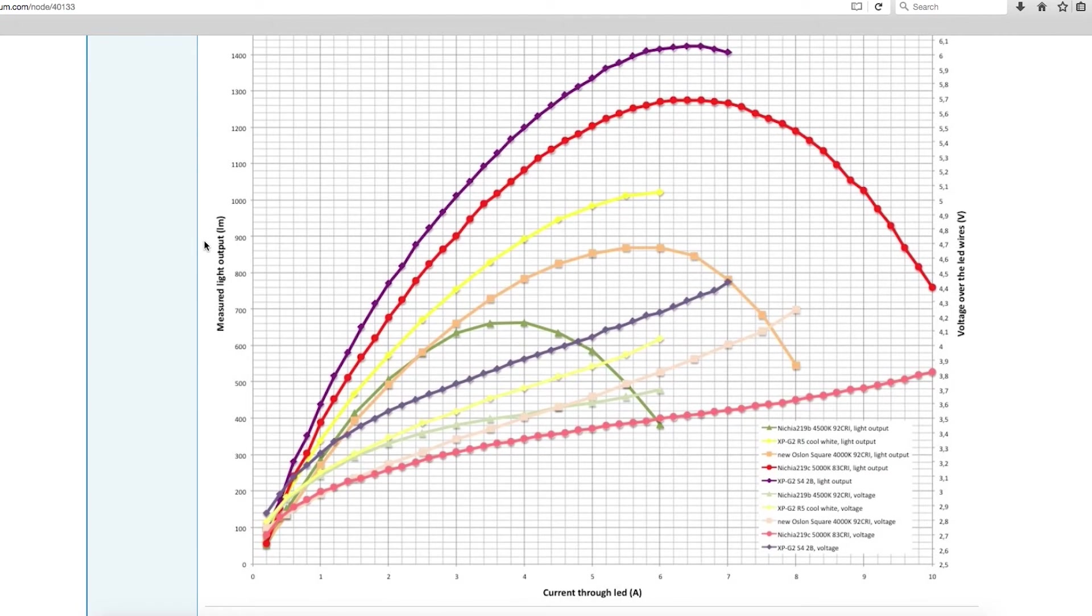You can see that as you increase current, you're getting diminishing returns as far as lumens go. So we'll be focusing on this red line here, as that's the LED that I used for this project.